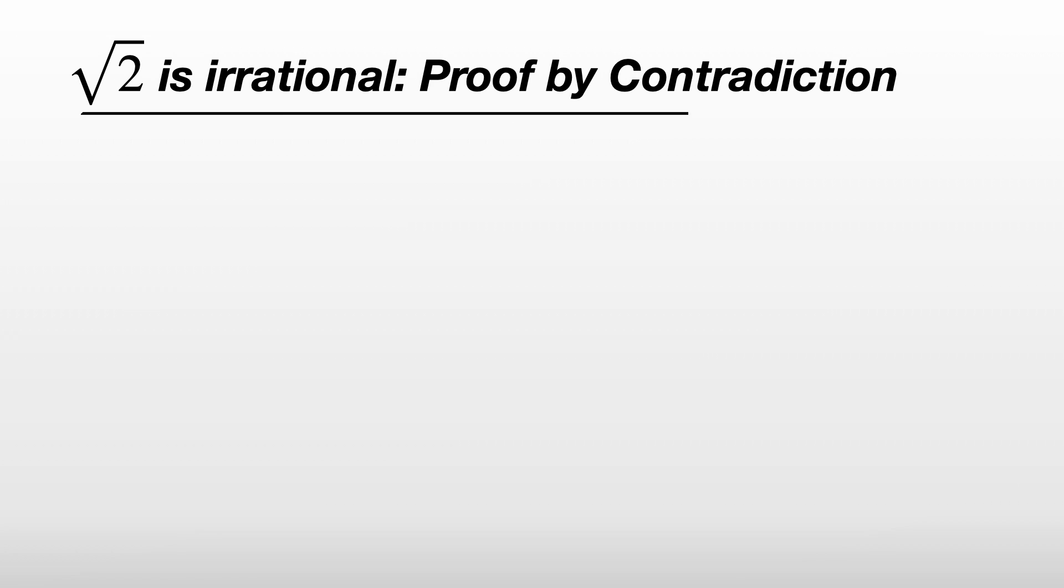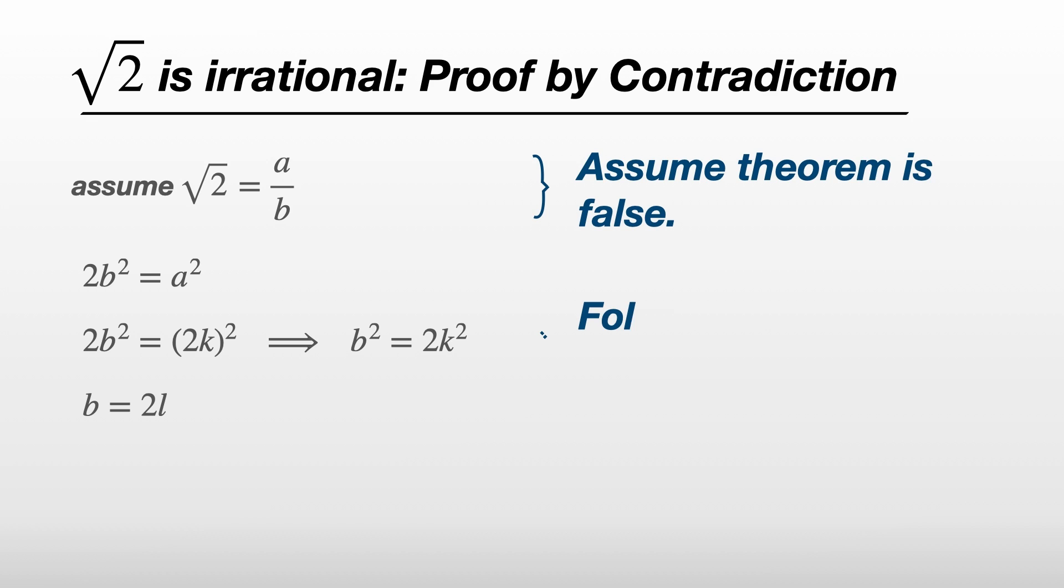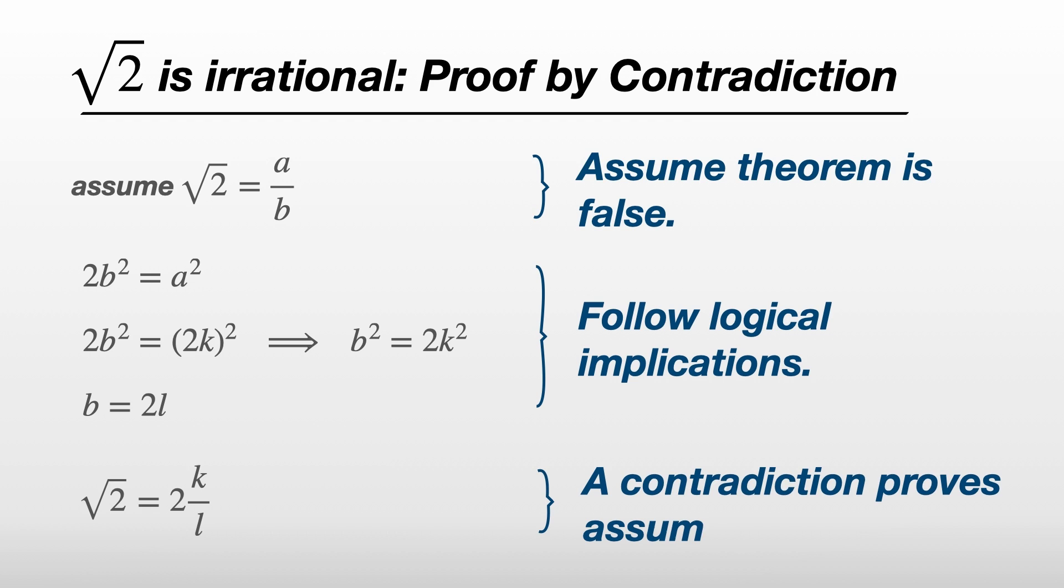It's worth going over this again, because this method of proof by contradiction is one of the most common methods of proving theorems in maths. To prove a theorem like the square root of 2 is irrational, you start by first assuming the opposite of the thing you're trying to prove is true, and that your theorem is false. You then follow the logical implications, and if you reach a contradiction, then your original assumption was false, and so the theorem must be true.